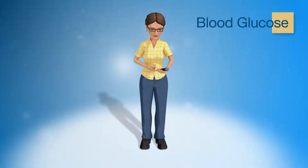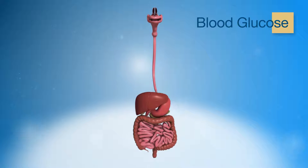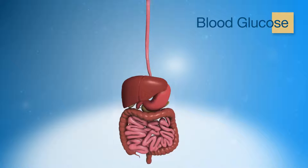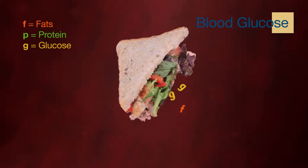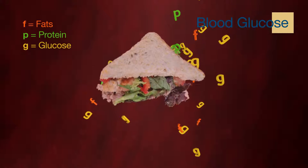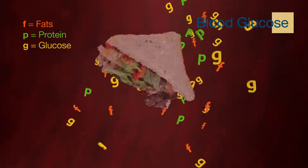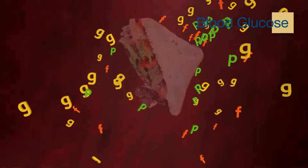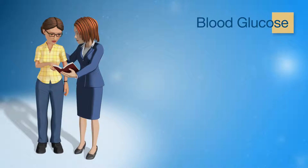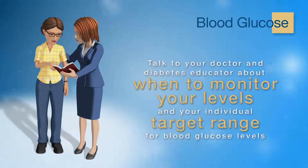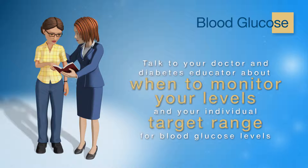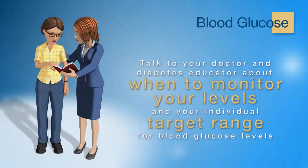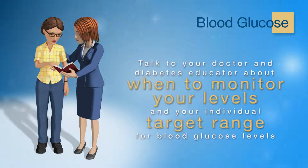Blood glucose levels will vary at different times of the day, depending on many factors. Daily blood glucose monitoring will help you to know what your blood glucose levels are at different times during the day and how factors such as food, stress and exercise affect your blood glucose levels. This can help you and your doctor to make decisions about your diabetes management to ensure that they stay as close to your target range as possible. Talk to your doctor and diabetes educator about when to monitor and your individual target range.